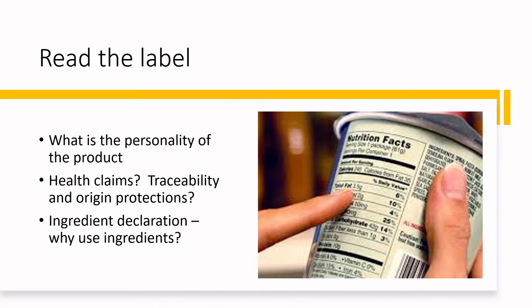Do take time to read labels. Just from the front of label, what sort of personality does your product have? What sorts of health claims, traceabilities, or origin protections are necessary for this category? For example, if I'm making ice cream sandwiches, am I noticing that all of my competitors are using kosher certification? If so, I may be really inclined to get kosher certification for my own product as well, even though it may not necessarily be a product I'm targeting — because my competitors are feeling that it's important.